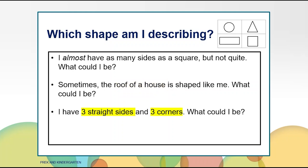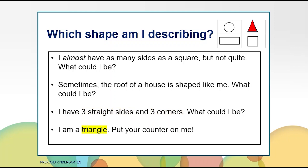Here is the next clue. I have three straight sides and three corners. What could I be? Now that you have all the clues, decide if you want to keep the counter or move it. The answer is a triangle. Put your counter on the triangle. The triangle has three straight sides and three corners.